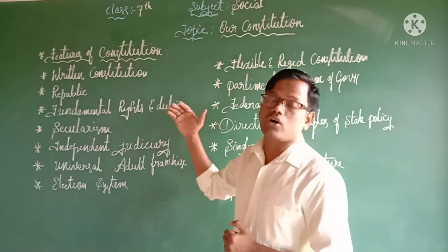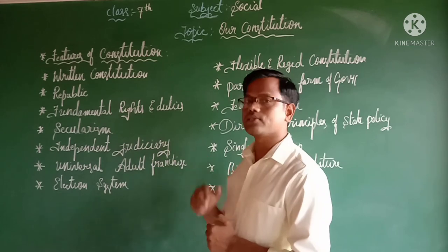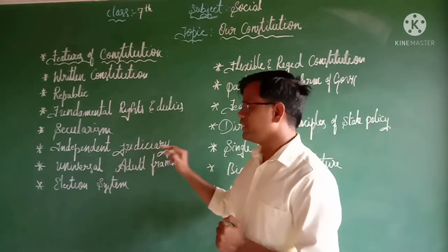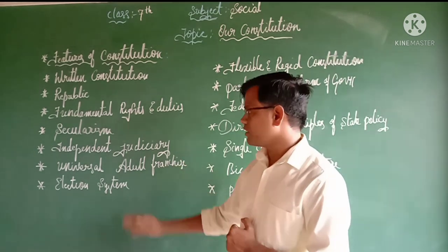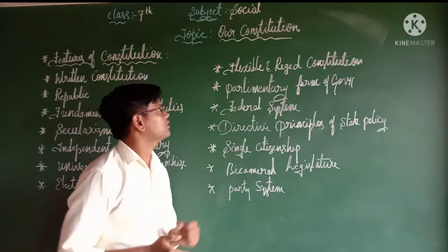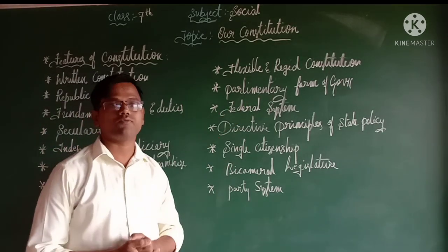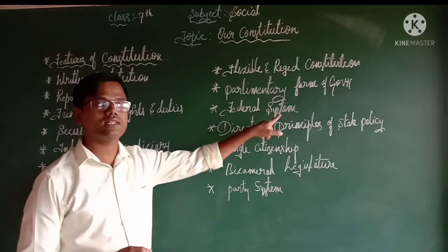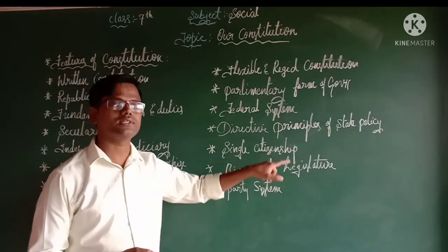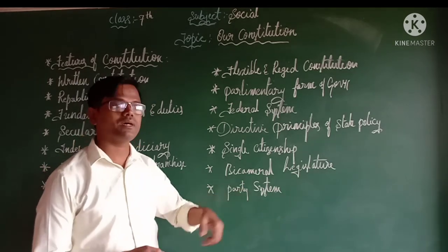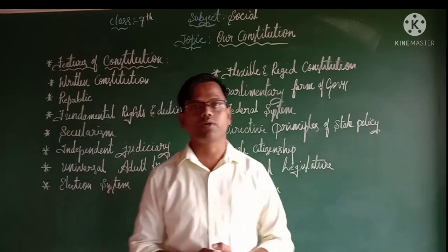Today we are going to discuss other important features of our Indian constitution, like secularism, independent judiciary, universal adult franchise, election system, flexible and rigid constitution, parliamentary form of government, federal system, directive principle of state policy, single citizenship, bicameral legislature, and finally party system. Let us discuss one by one.